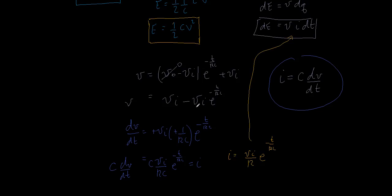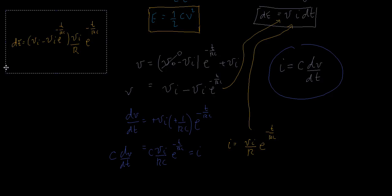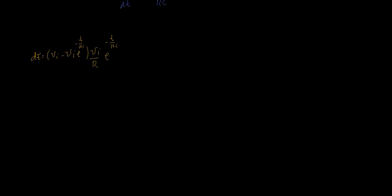Now we have the current and the voltage, so we can plug them into dE = V·I·dt. The differential of energy equals the voltage (VI minus VI·e to the minus t over RC) times the current (VI over R times e to the minus t over RC) times dt. Factoring out VI, we get VI squared over R times (1 minus e to the minus t over RC) times e to the minus t over RC dt.